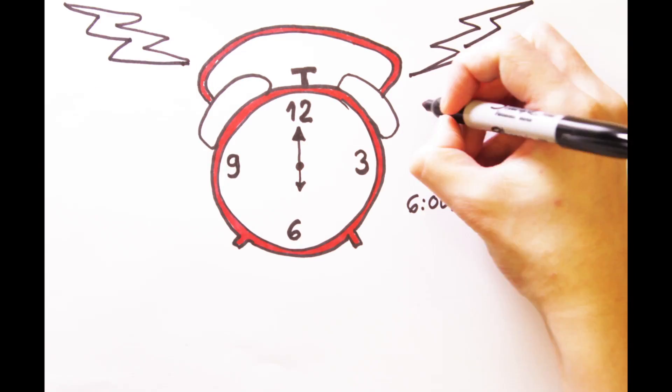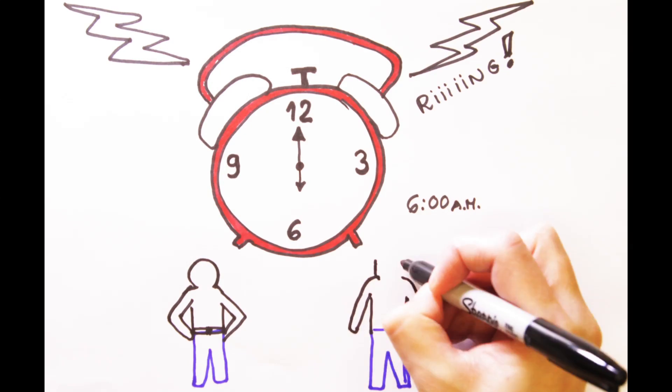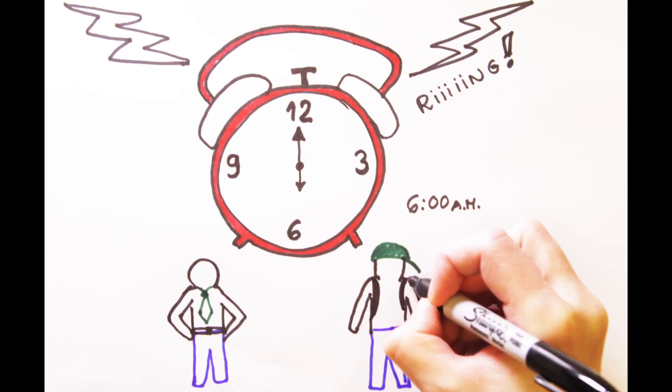while the older we become, we shift our activity towards the early morning. This relationship is thought to occur partly due to shifts in our circadian clock mechanisms.